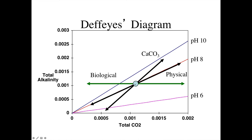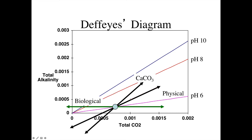Physical processes change total alkalinity and total CO2 on a one-to-one basis. For this initial starting condition near the one-to-one line, physical processes won't change the pH significantly through evaporation or precipitation. But if we move starting conditions to a lower alkalinity and lower total CO2, physical processes actually change pH — from around 6 up toward 7.